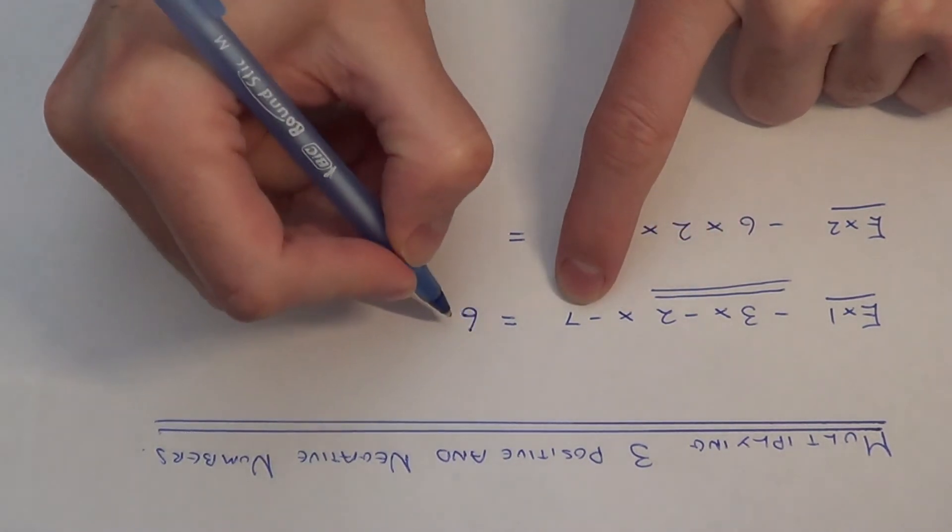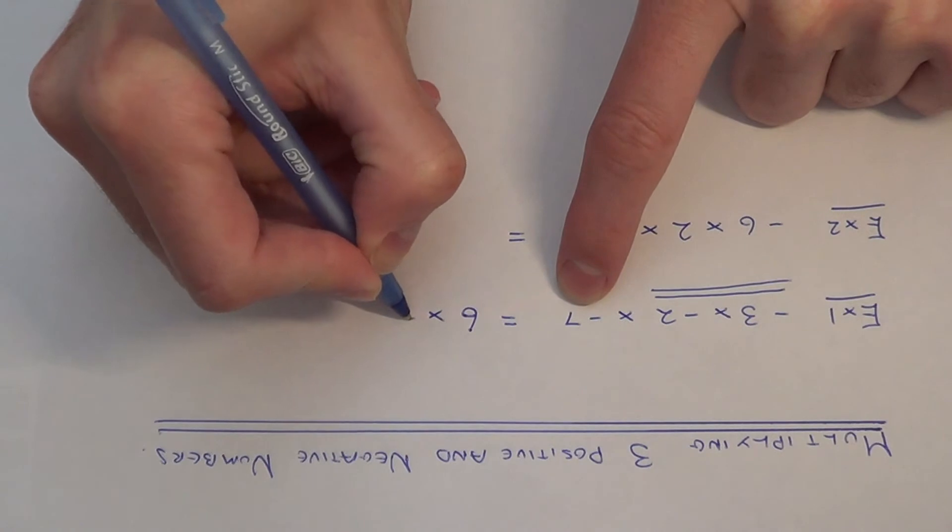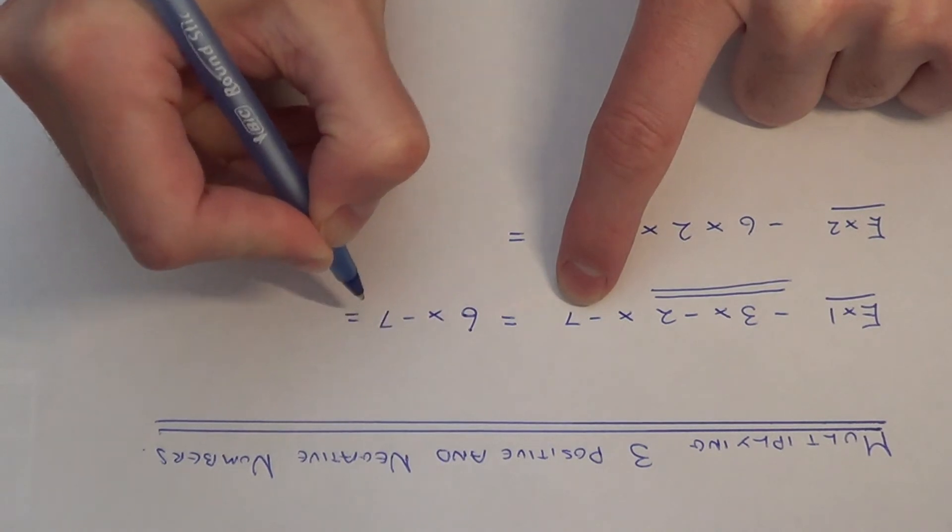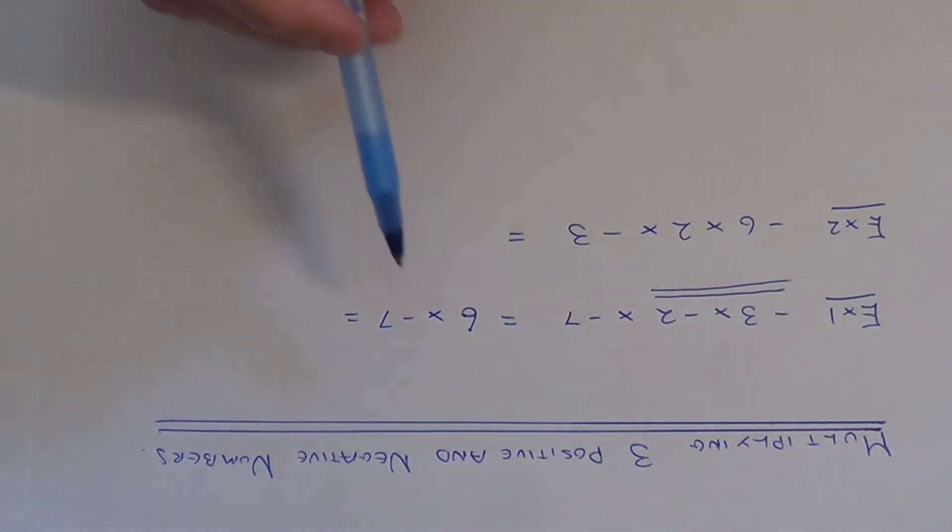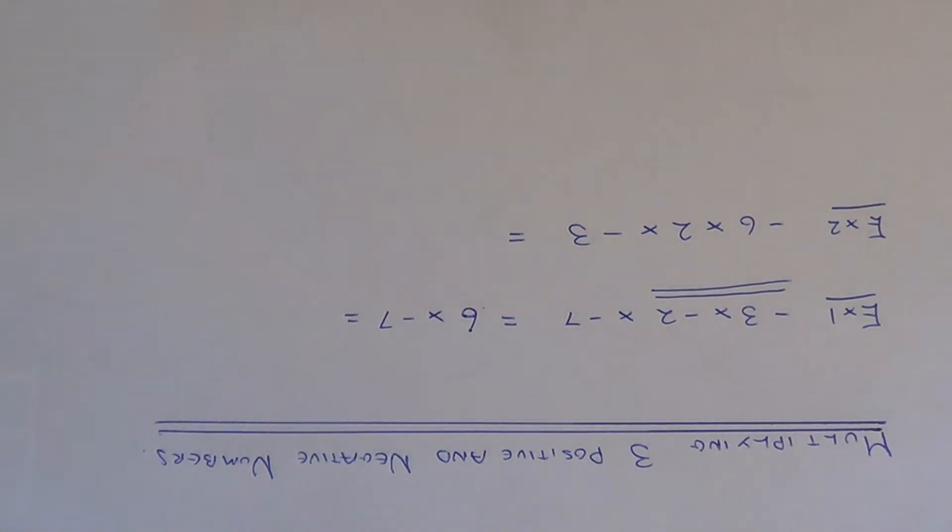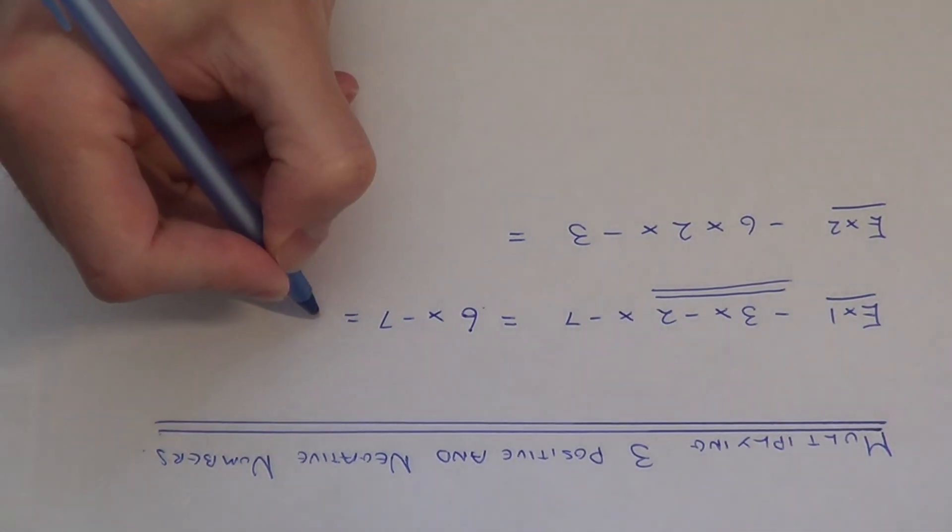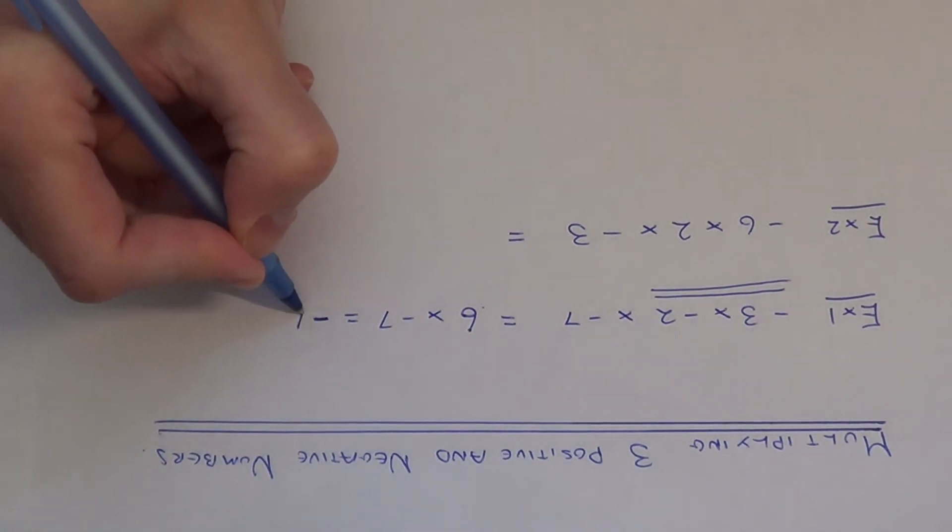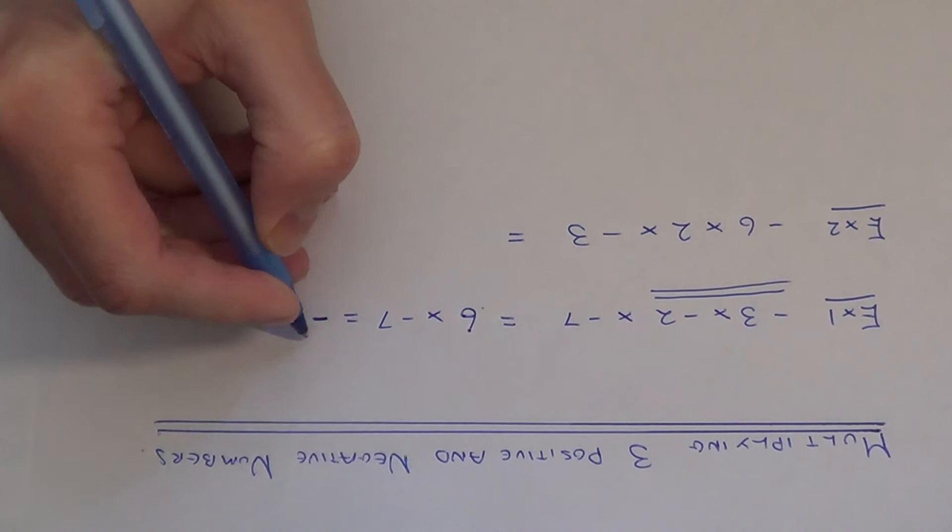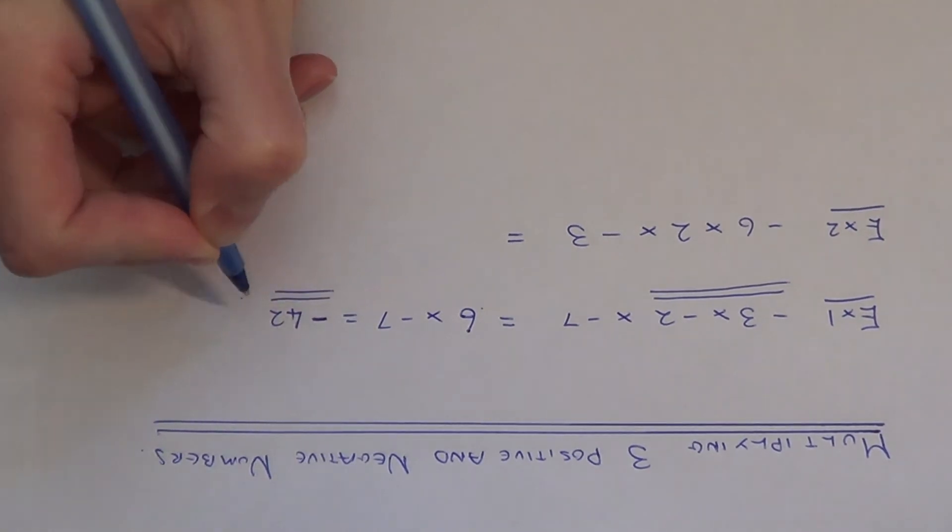We then need to multiply that answer by negative seven. Again we can use our rules for multiplying positive and negative numbers. This time we have a positive times a negative. A positive times a negative will give a negative answer. Six times seven is forty-two, so our final answer is minus forty-two.